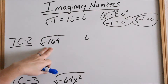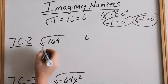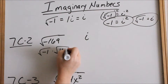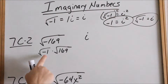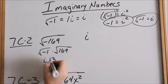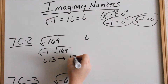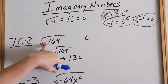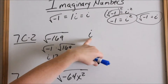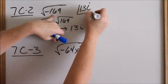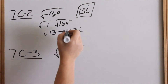Looking at 7c2: square root of negative 169. You can think of this as square root of negative 1 times square root of 169. The square root of negative 1 is i by definition, and the square root of 169 is 13. Instead of writing i 13, we write it as 13i — numbers first and then letters. I'm pulling out the negative from under the radical as an imaginary number and then taking the square root of the remaining number.